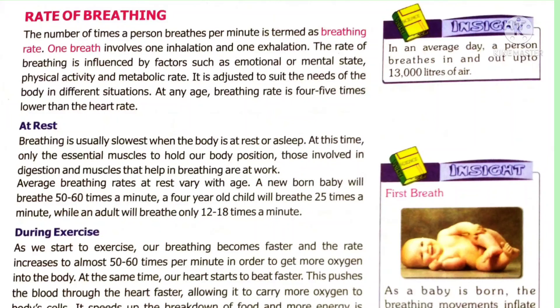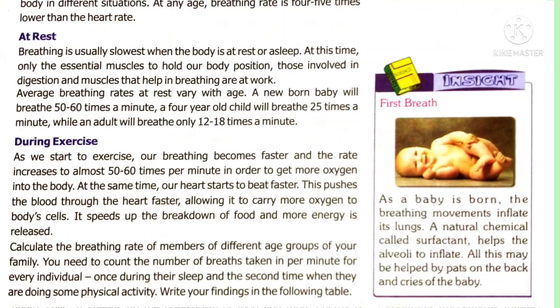A newborn baby breathes 50 to 60 times a minute, whereas a four-year-old child breathes 25 times a minute, and an adult breathes only 12 to 18 times a minute. For a newborn baby, a natural chemical substance called surfactant helps the alveoli to inflate. By giving a simple pat on the baby's back, the baby starts crying because of the breathing movement — this first breathing movement inflates its lungs. When we start doing exercise, our breathing becomes much faster, and the rate of breathing increases to almost 15 to 60 times per minute in order to get more oxygen into the body.